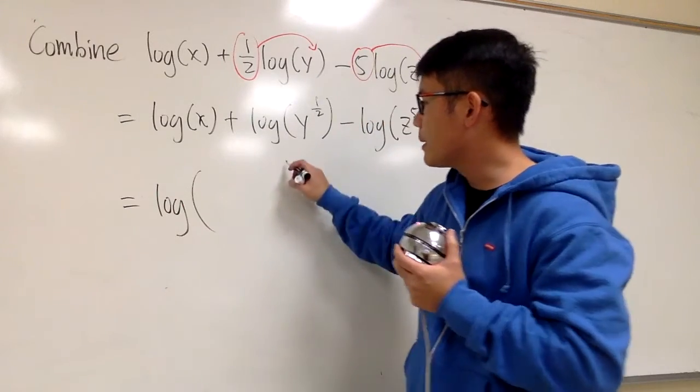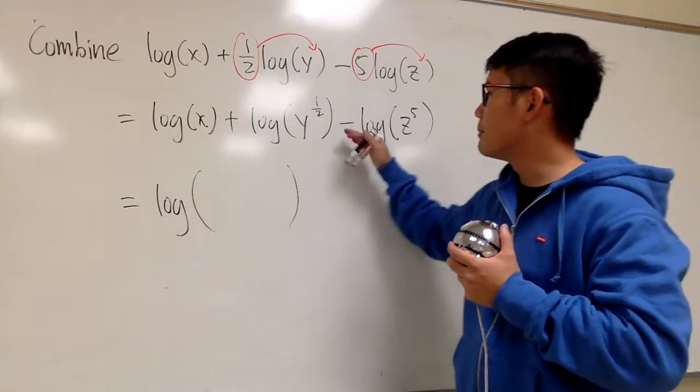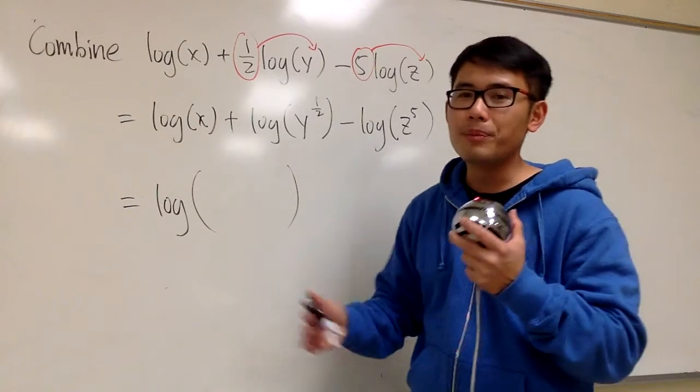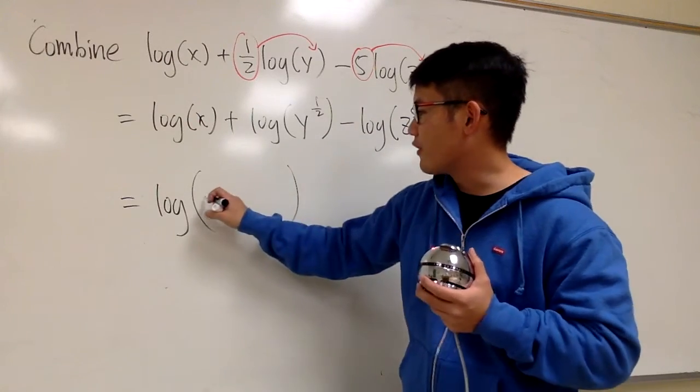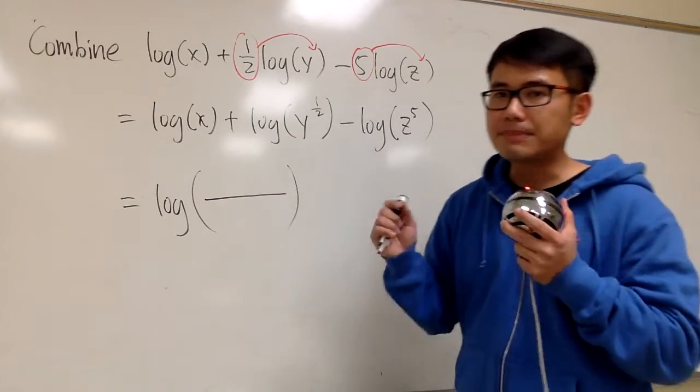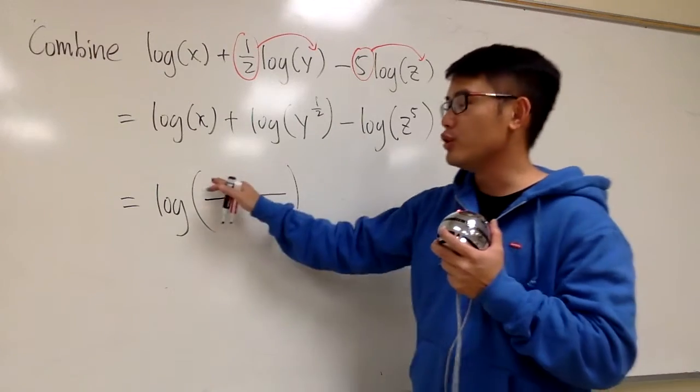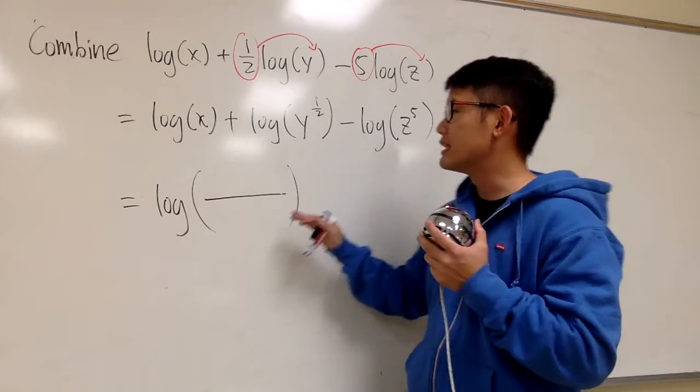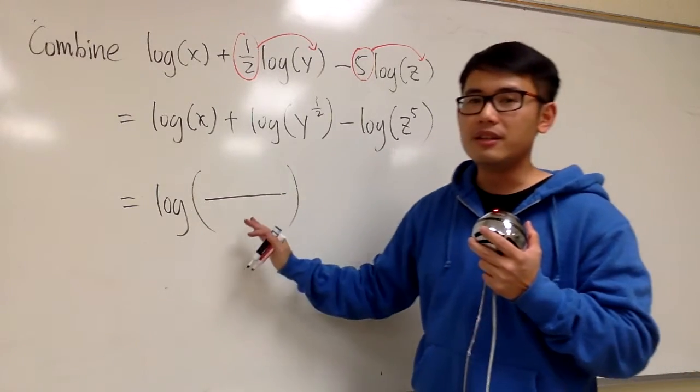I will open a big parenthesis. And we see some plus, some minus, so we know the inside will be a fraction. Let's get the fraction bar ready. Any term that's been added is going to be on the numerator. And any term that's been subtracted is going to be in the denominator.